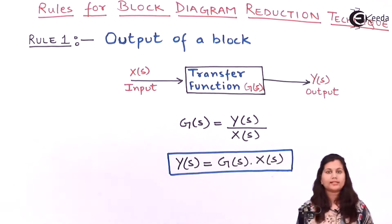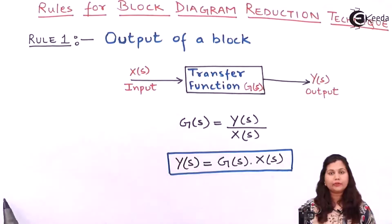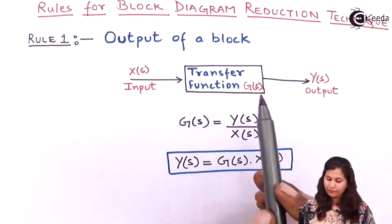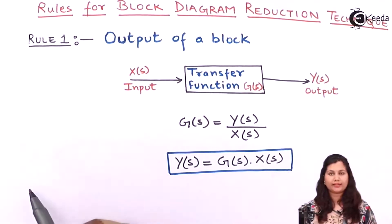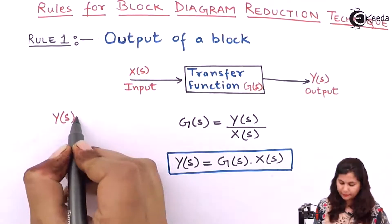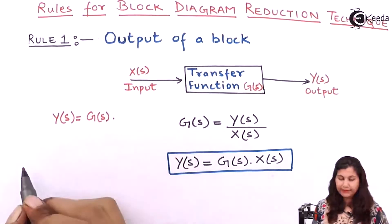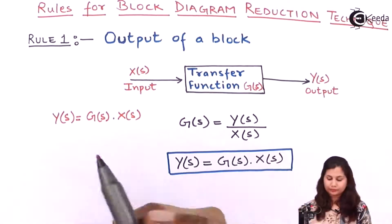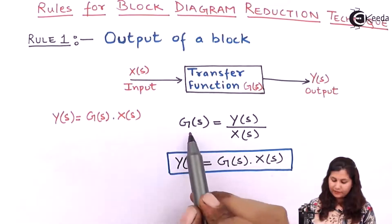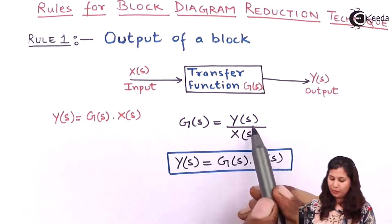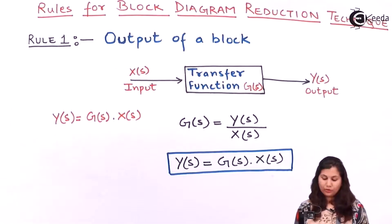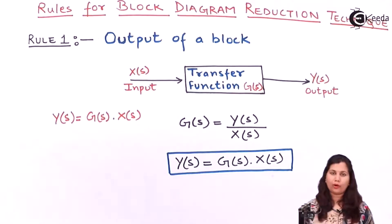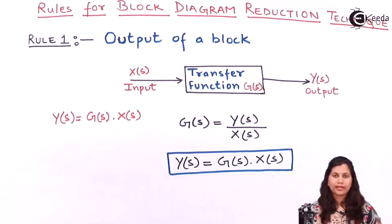This block has the transfer function G(S), the input is X(S) and the output is Y(S). So Y(S) = G(S) · X(S). If we rearrange this, we get the transfer function of the block as Y(S)/X(S). Whenever we encounter a block in a block diagram, we can use this rule to find out the output of a block.